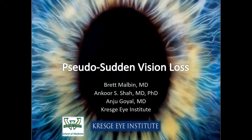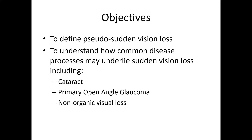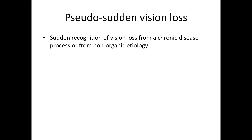This video will review causes of pseudosudden vision loss. The objectives are to define pseudosudden vision loss, and to understand how common disease processes may underlie this sudden vision loss, including cataract, primary ophthalmological glaucoma, and non-organic visual loss. Sudden recognition of vision loss from a chronic disease process or from non-organic etiology by a patient is defined as pseudosudden vision loss.